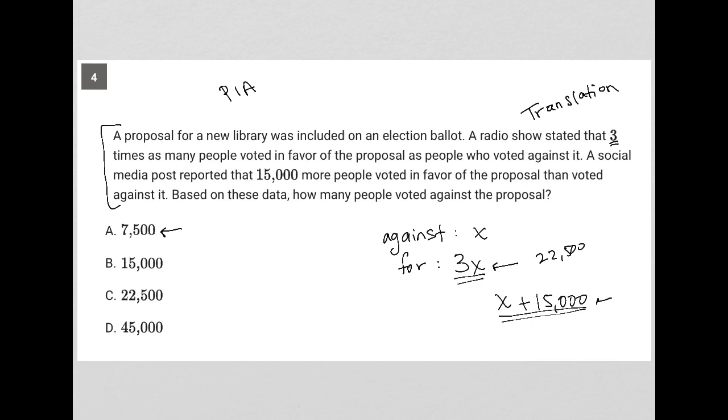And then based upon this scenario, we'd also have, if X, again, this is basing this on choice A. So if X were 7,500, then 3X would be 22,500, and X plus 15,000, or 7,500 plus 15,000, would also equal 22,500.